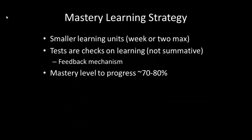In this mastery learning strategy, he believed there should be small learning units every week — one or two weeks max, nothing more. At the end of each unit, there should be a test that checks learning, possibly ungraded, giving both teacher and student feedback. If a student scored 70 to 80 percent or above, they were considered to have mastery-level progress and could move on to new material.